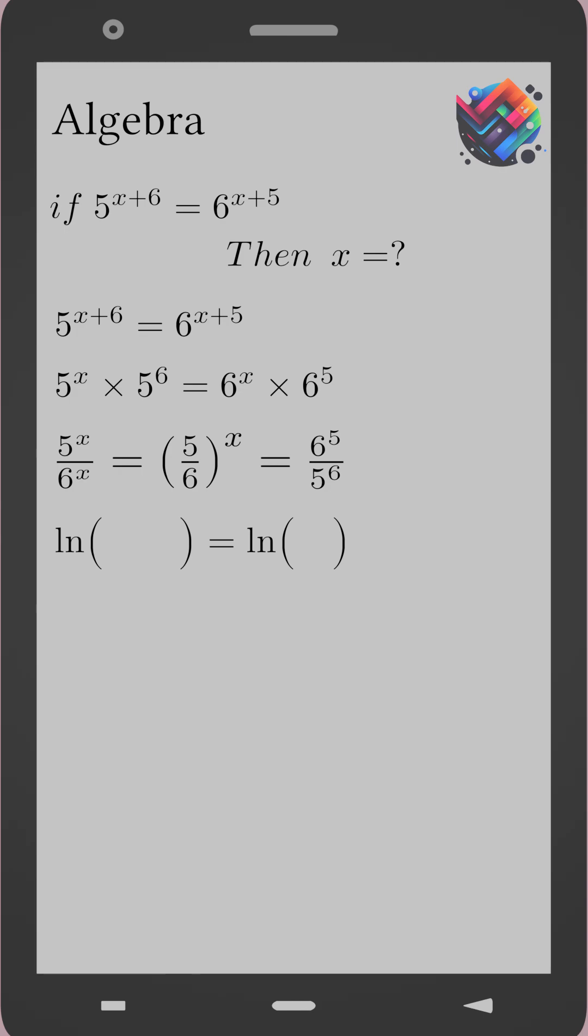Take the natural logarithm on both sides. The natural log of open parentheses 5 over 6 close parentheses to the power x equals the natural log of 6 to the power 5 over 5 to the power 6. Bring down the exponent,